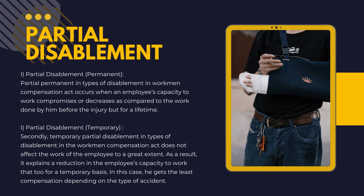— being a right-handed person, Rahul will still be able to perform his tasks but with a reduction in efficiency for his whole life. This is termed as partial permanent disablement, meaning he can do his work with his right hand but his overall work efficiency is reduced permanently.